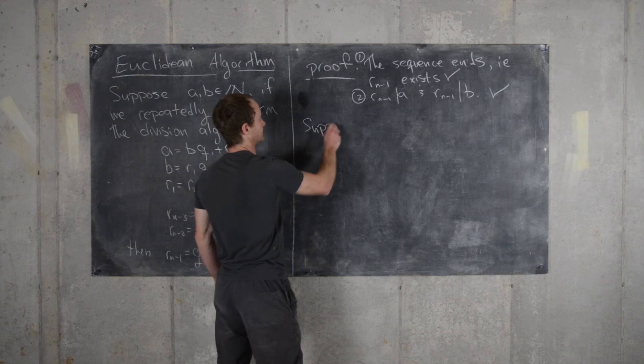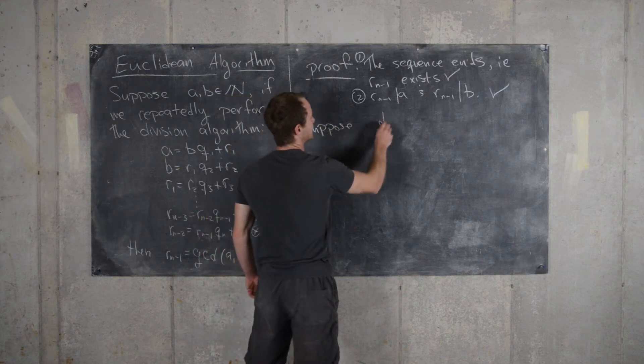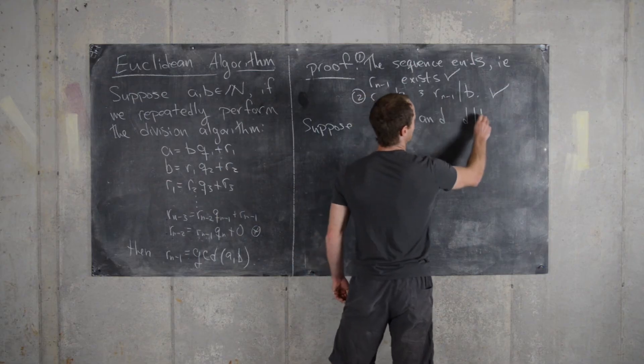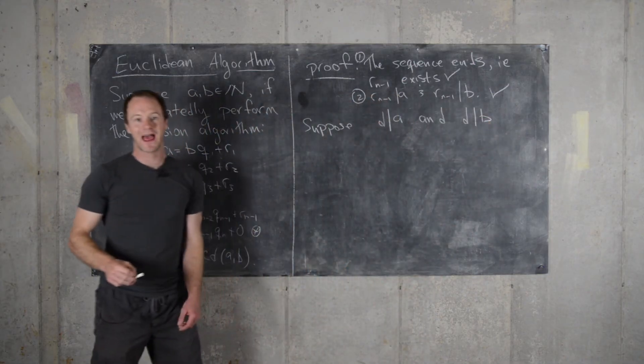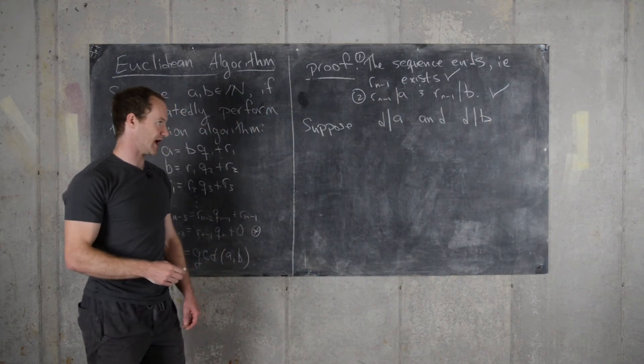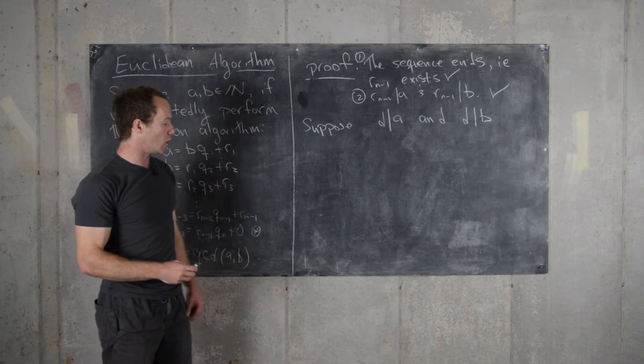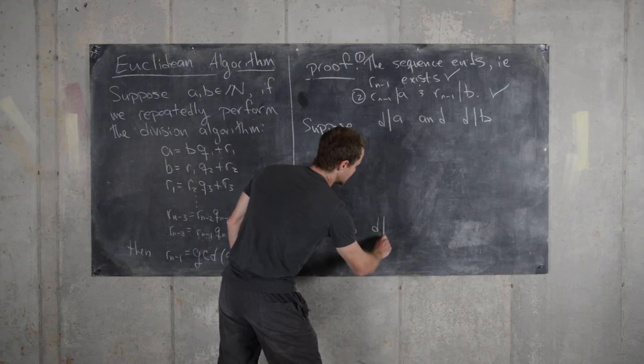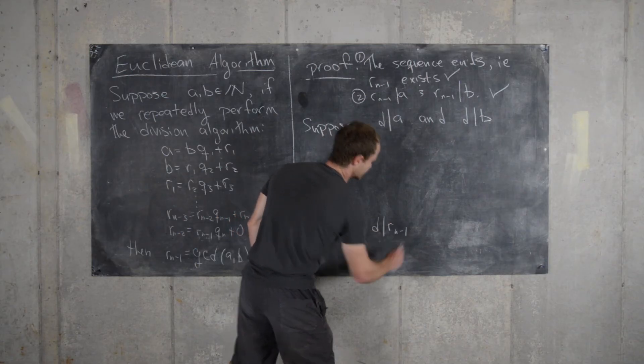Let's suppose that D divides A and D divides B. In other words, we have another common divisor of A and B. And then our goal, which we can put at the bottom, will be to show D divides R N minus 1.